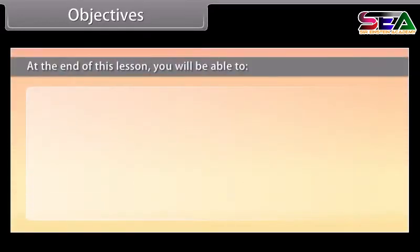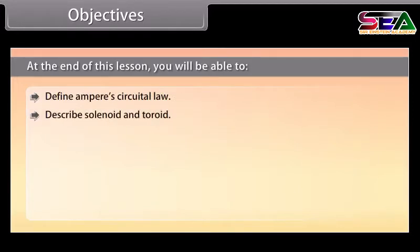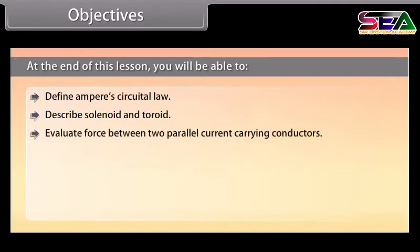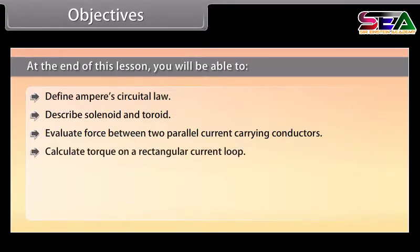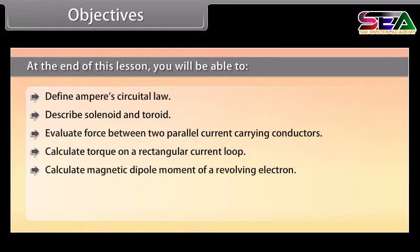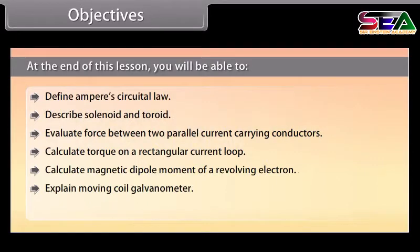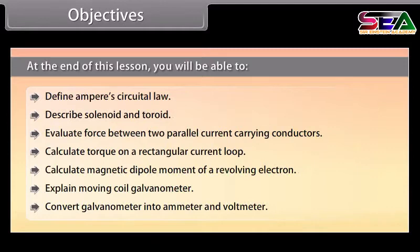At the end of this lesson, we'll be able to: Define Ampere's Circuital Law; describe solenoid and toroid; evaluate force between two parallel current-carrying conductors; calculate torque on a rectangular current loop; calculate magnetic dipole moment of a revolving electron; explain moving coil galvanometer; and convert galvanometer into ammeter and voltmeter.